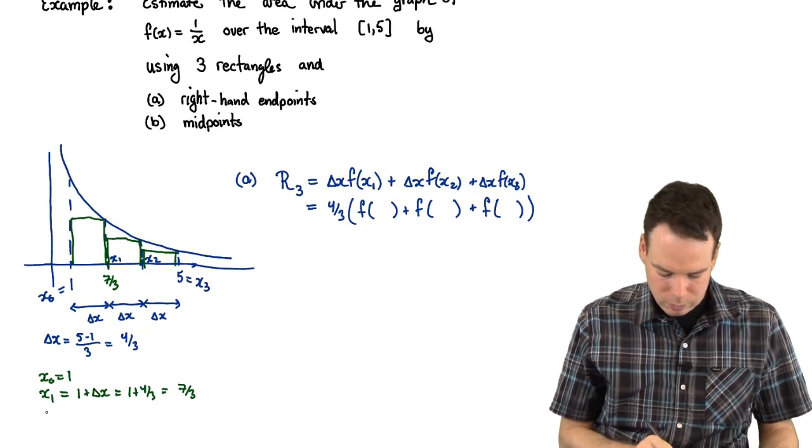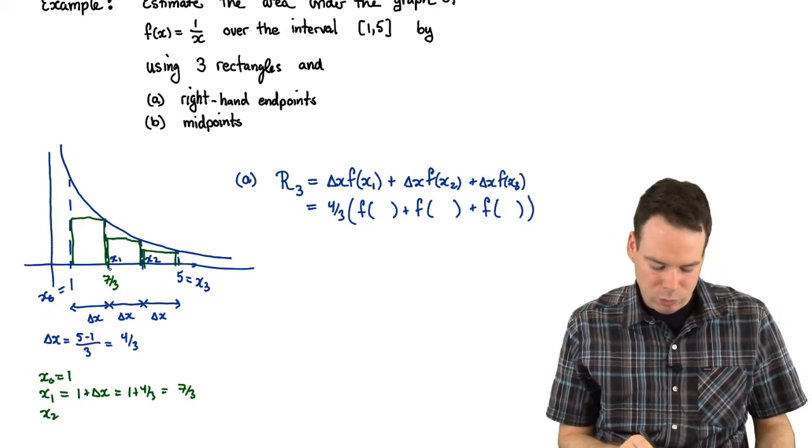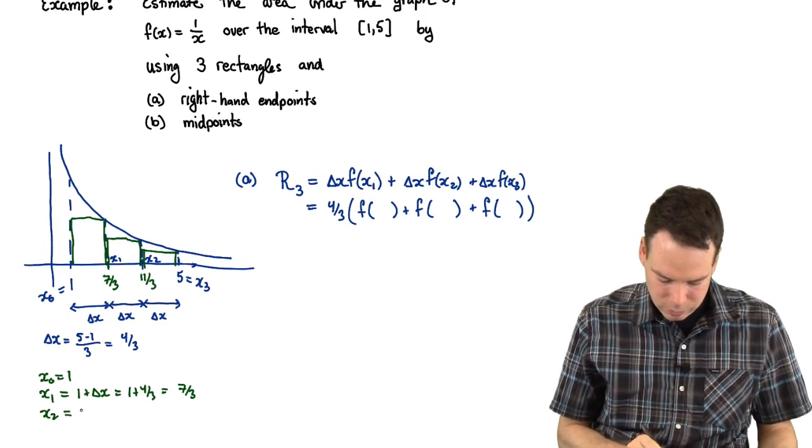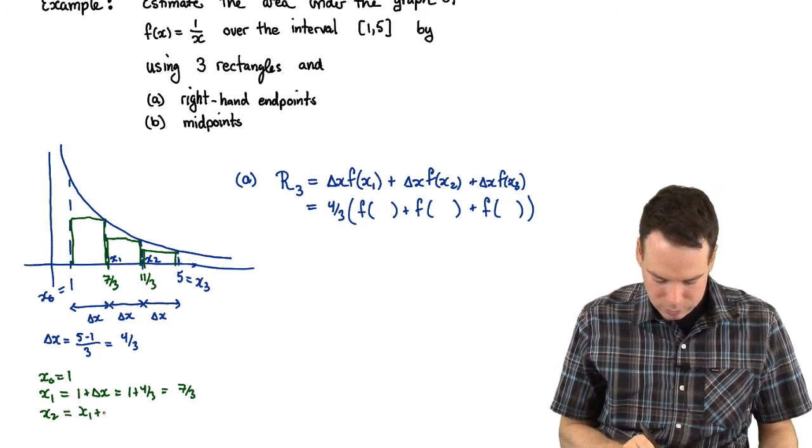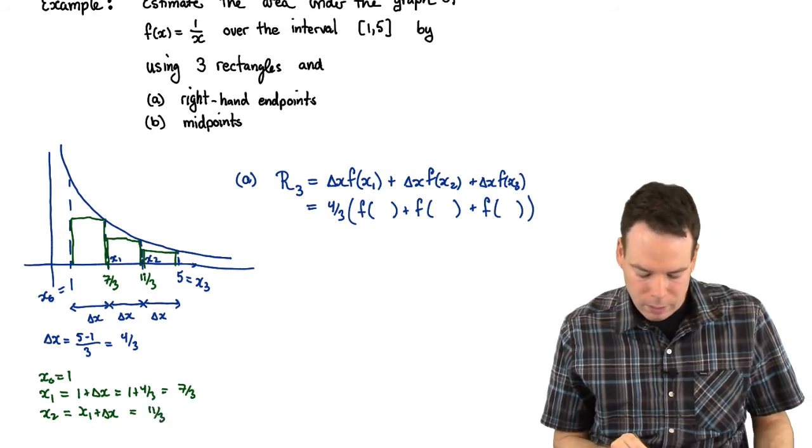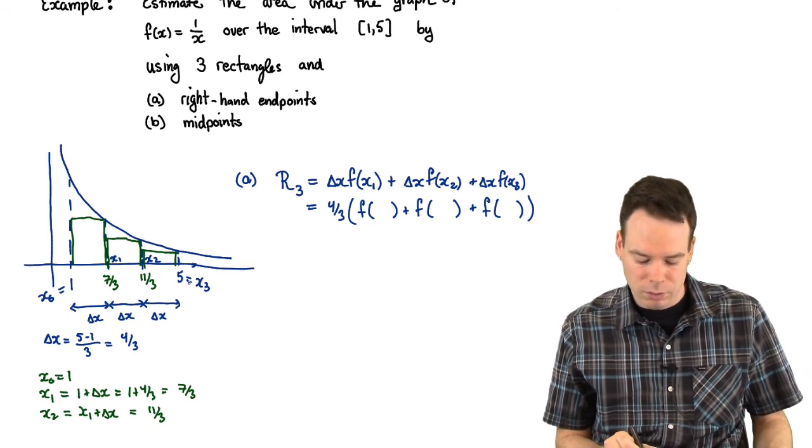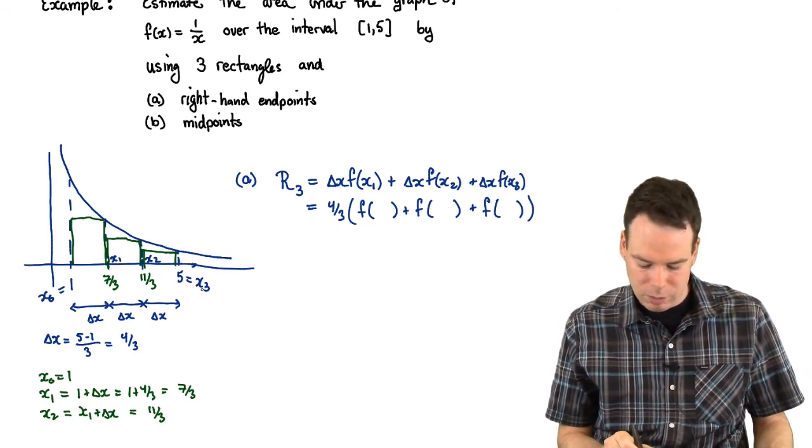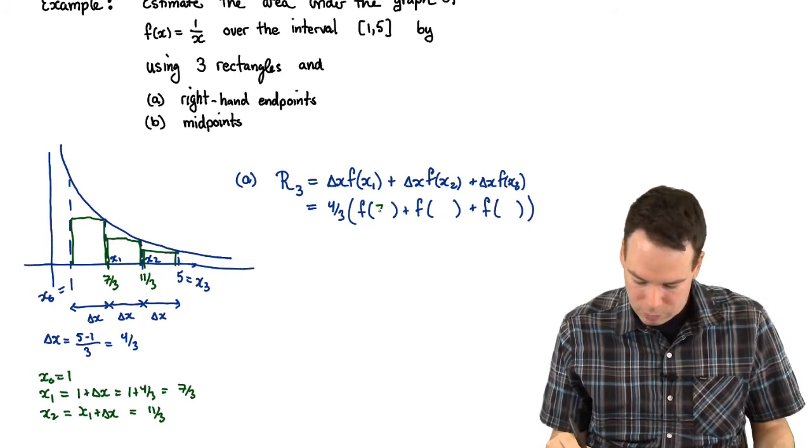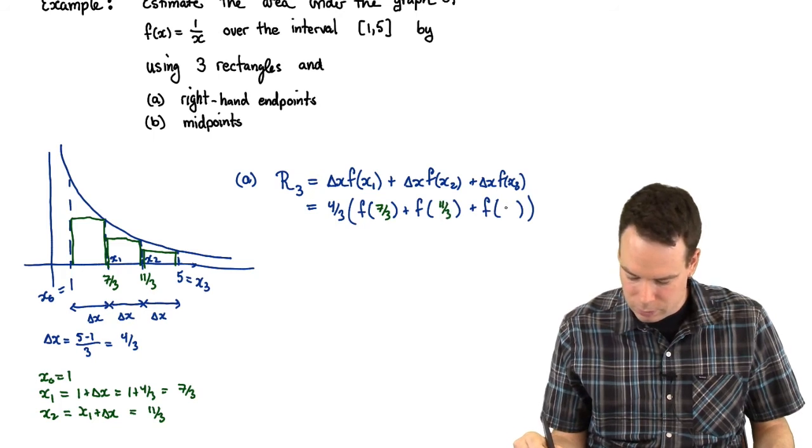What's x2? x2 is, well, starting at 7 thirds, I move over another 4 thirds, so that would be 11 thirds. So x2 is x1 plus delta x, or in other words, 11 thirds. And then to get to x3, I start at 11 thirds, move over 4 thirds. That's 15 thirds or 5. That's in agreement with x3 being 5. So those are our values. We have 7 thirds, 11 thirds, and 5.